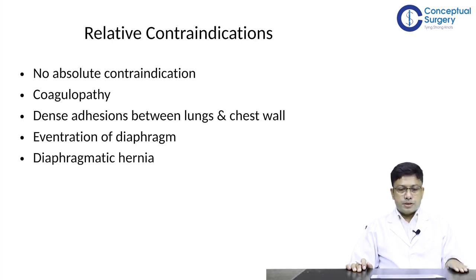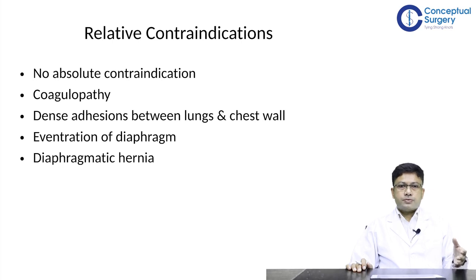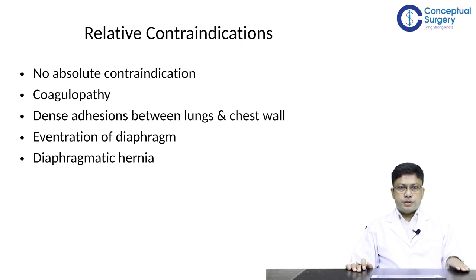If the patient has coagulopathy or is on anticoagulant medications, this requires special attention. If there is a history of previous thoracic procedures like thoracotomy, which can lead to adhesions between the lung parenchyma and the chest wall, utmost precautions are needed to avoid injuring the underlying lung. One should also be careful about the possibility of eventration of the diaphragm or diaphragmatic hernia, where a chest tube could be inadvertently placed through the diaphragm into intestinal organs.